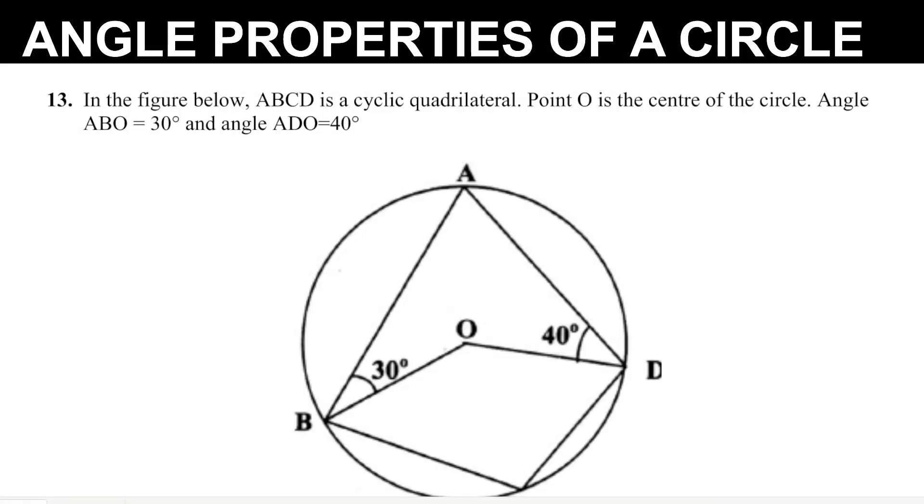Angle properties of a circle. In the figure below, ABCD is a cyclic quadrilateral. Point O is the center of the circle. Angle ABO equals 30 degrees and angle ADO equals 40 degrees.